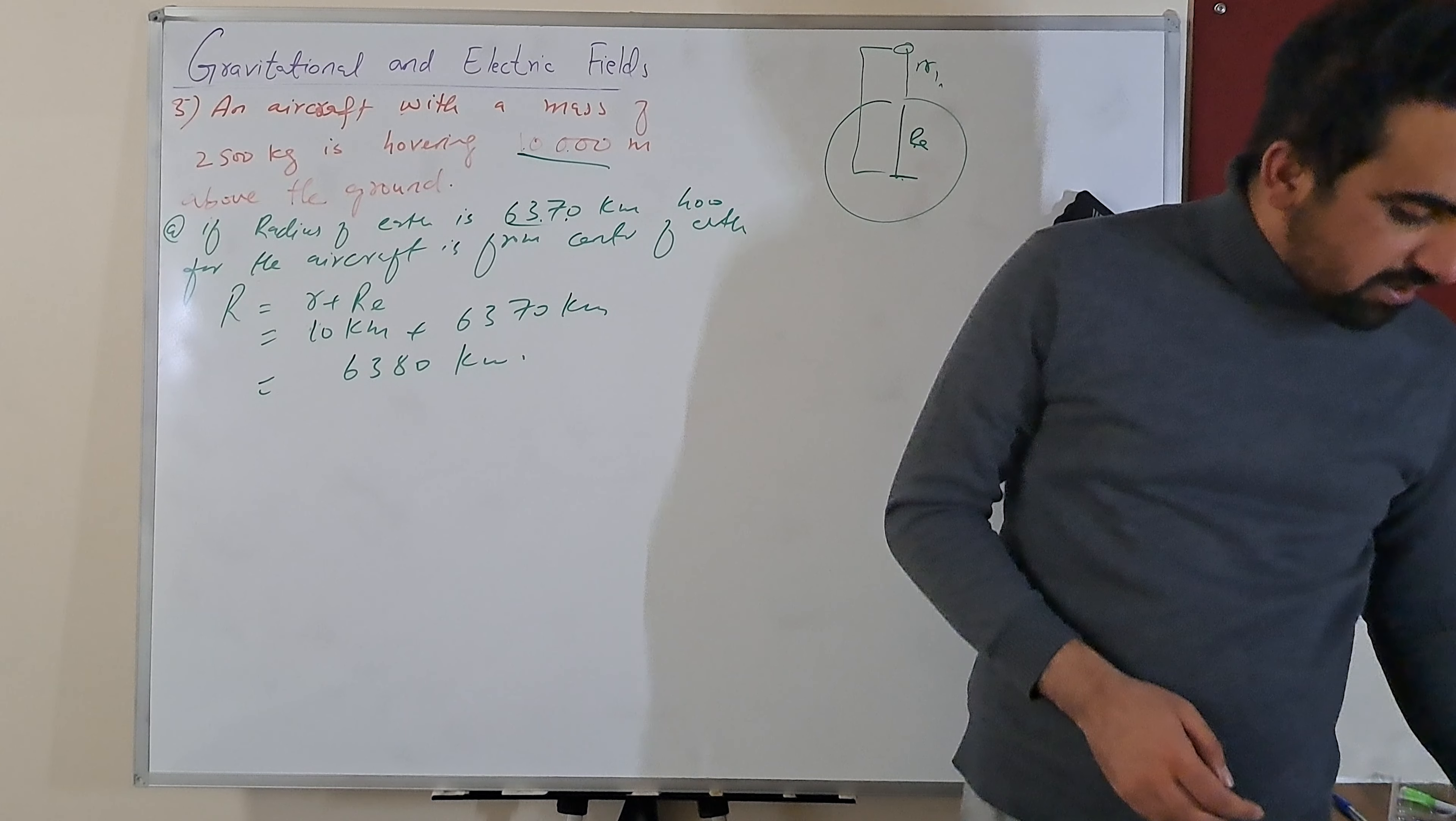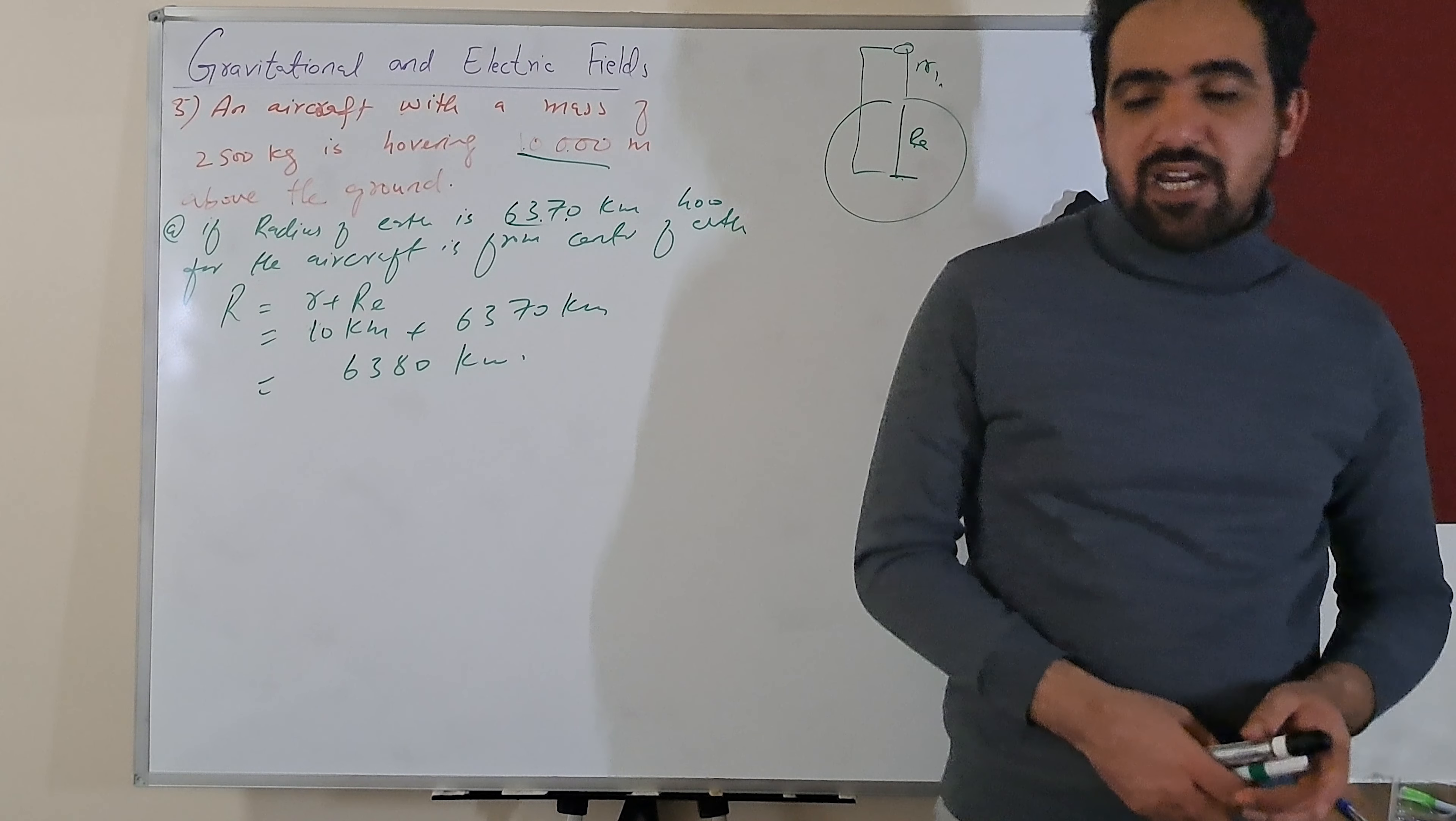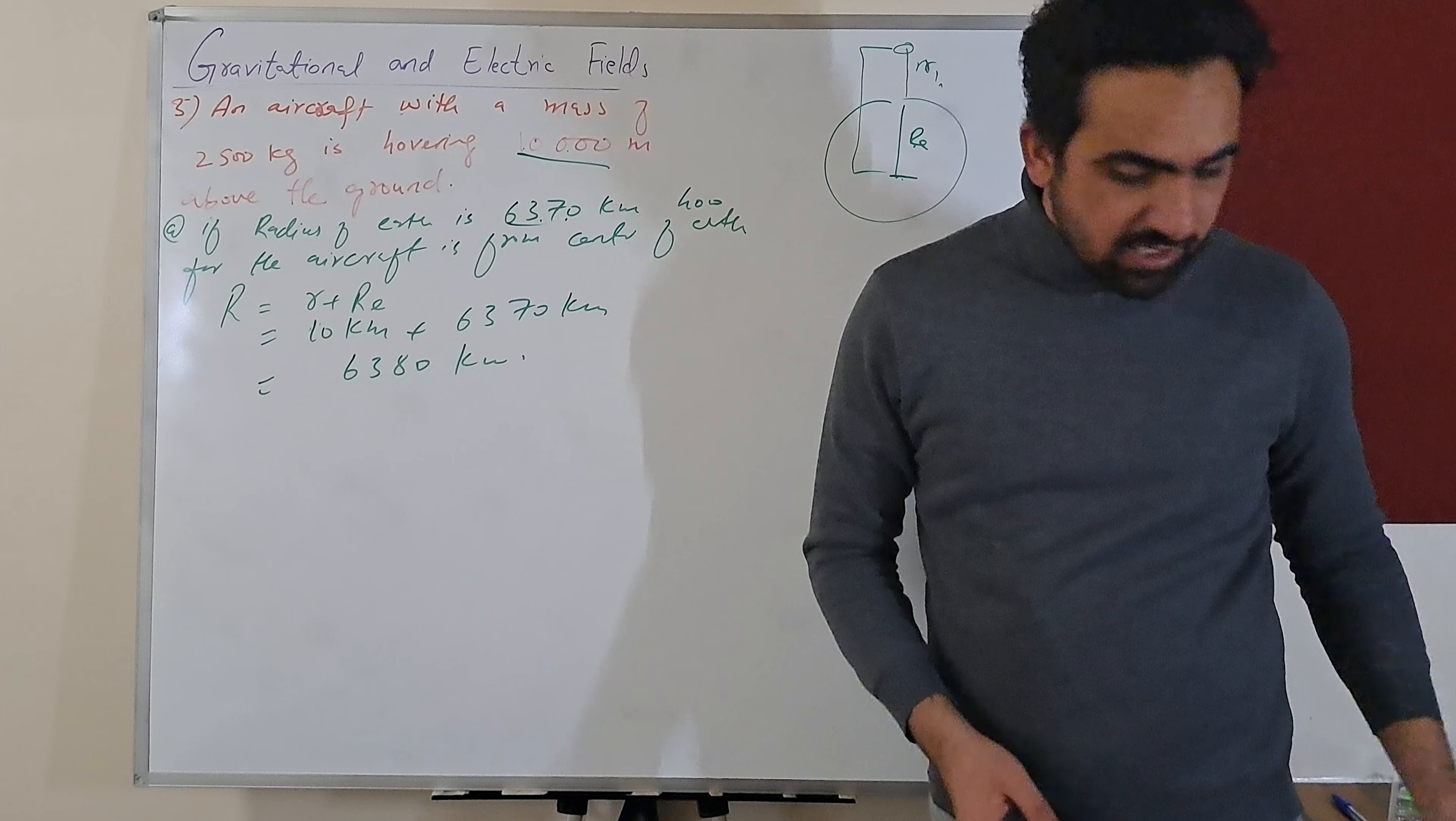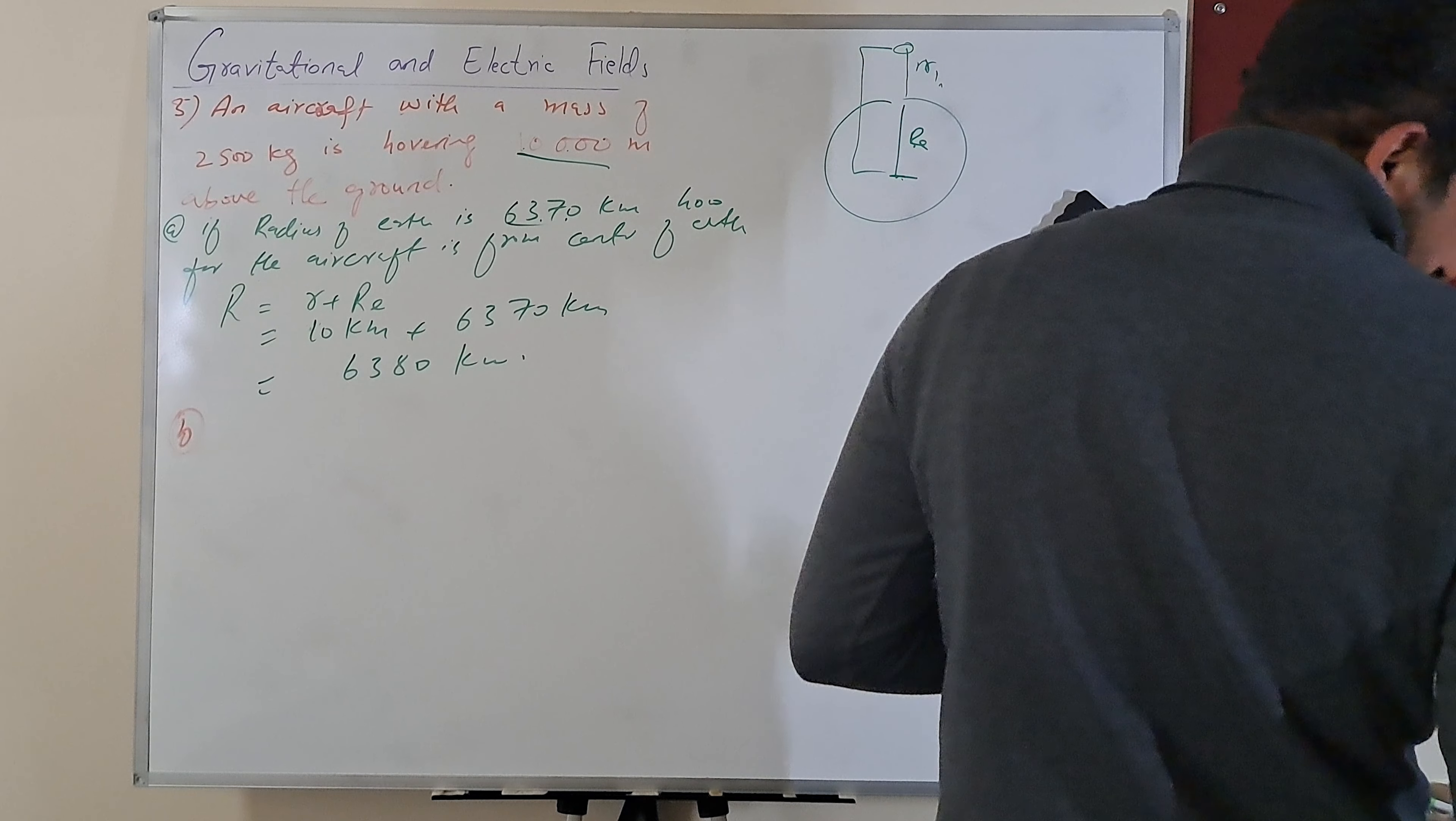Now what's the next question? How much upward force must the aircraft engine be providing to be able to keep it hovering at a constant altitude? The mass of Earth is 5.98 times 10 to the power 24 kg. This is another constant that we need to remember: mass of Earth is 5.98 times 10 to the power 24 kg, and we need to find the force.